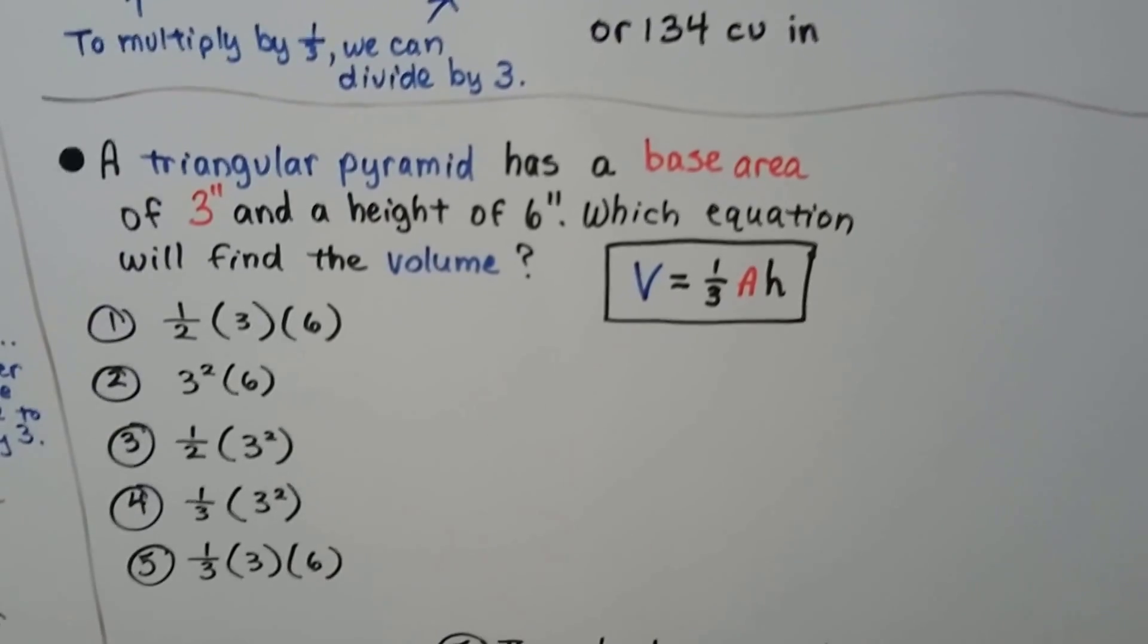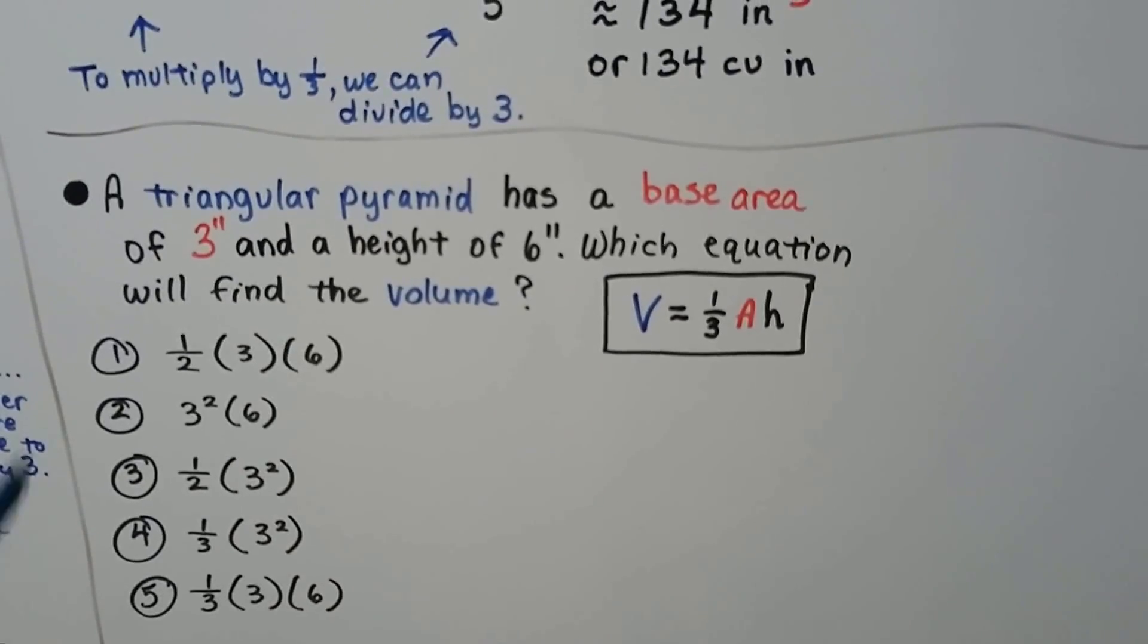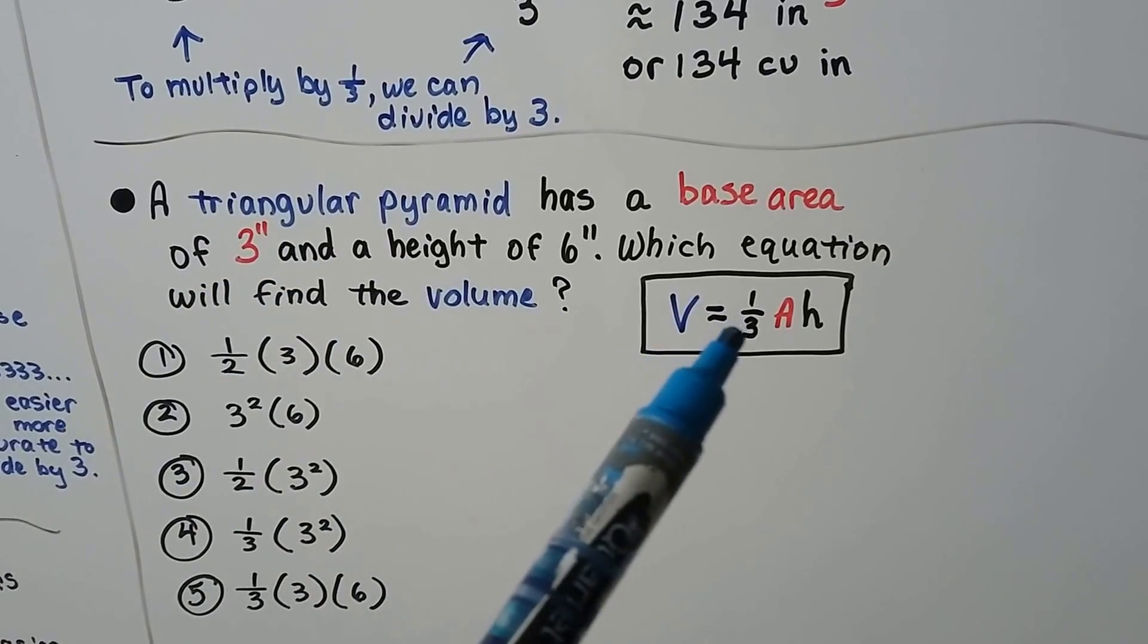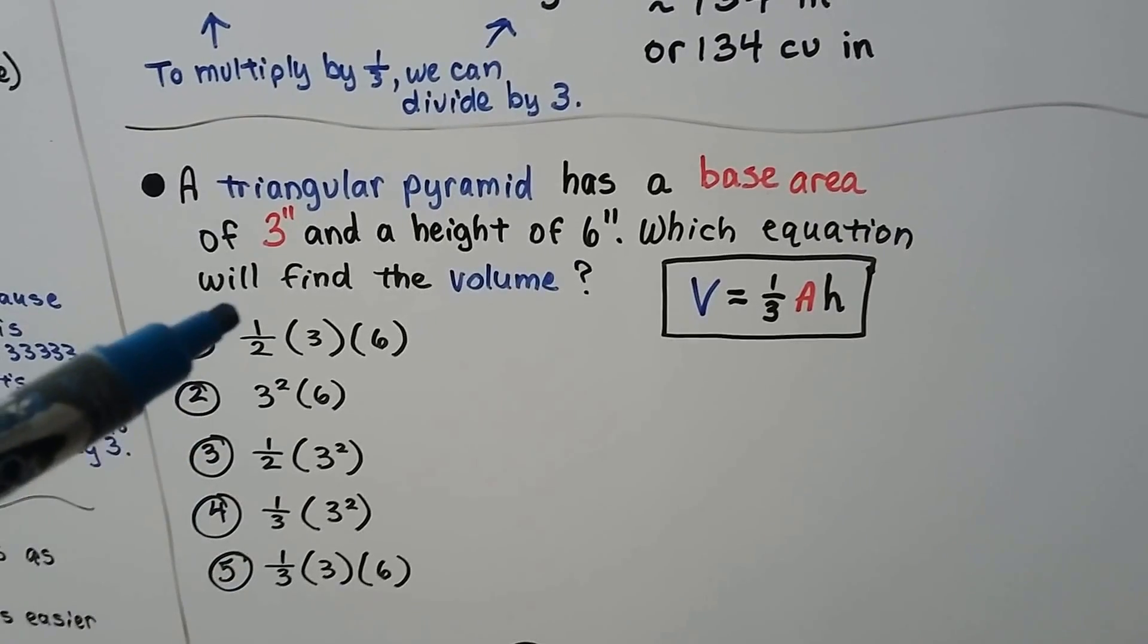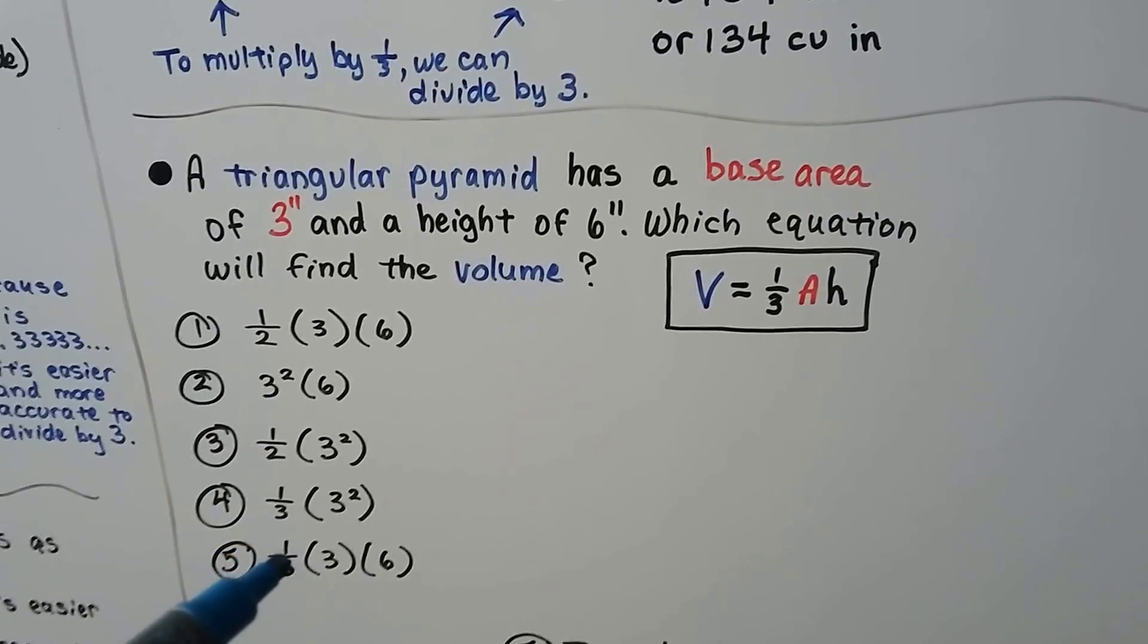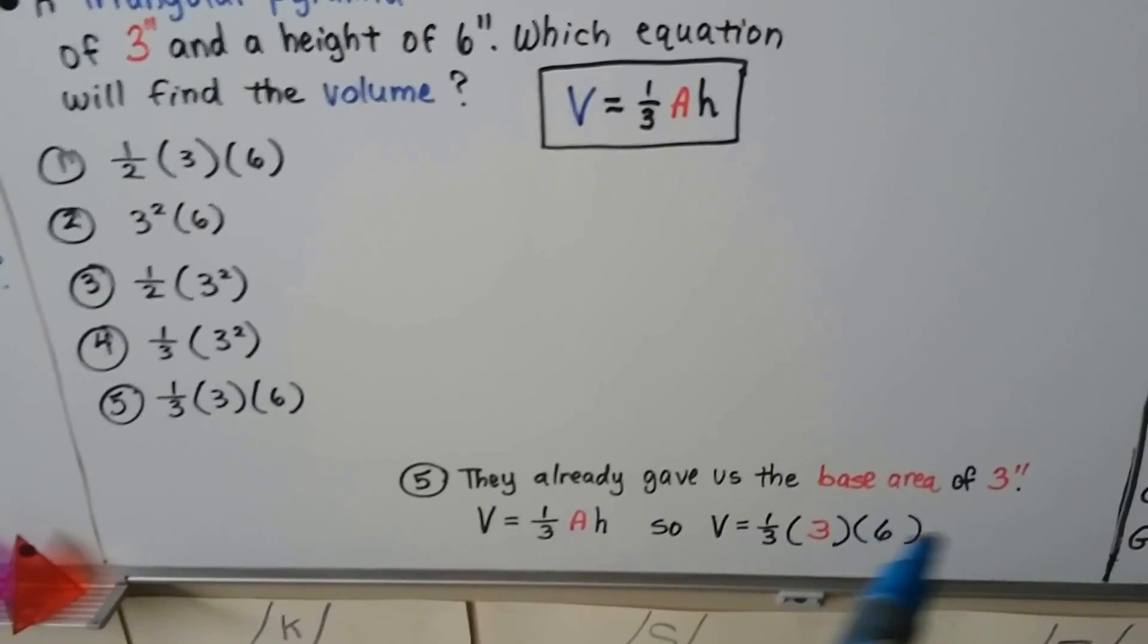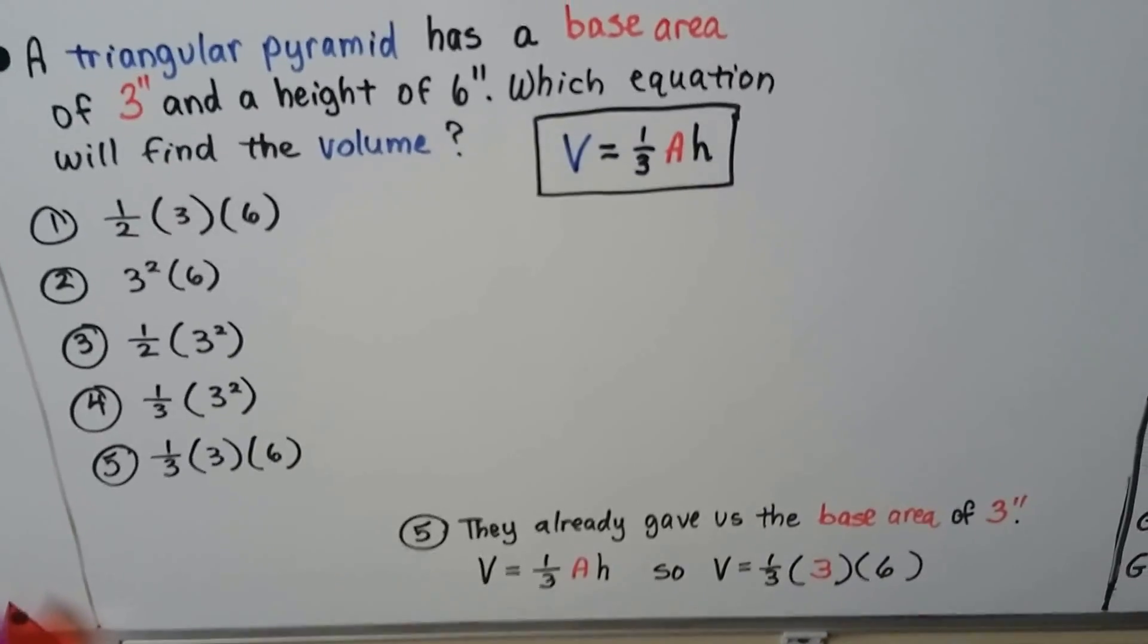A triangular pyramid has a base area of 3 inches and a height of 6 inches. Which equation will find the volume? Well, you know what? If you read this carefully, it's a triangular pyramid. And it's telling us the base area is 3 inches. That means it already gave us a. So we could just plug that into the formula. So it wouldn't be half, because that's not the formula. It would be this one. The volume would be 1 third times that 3 inch base times 6. So number 5. They already gave us the base area of 3 inches. It would probably say cubic inches. We just put the 3 in for the a.